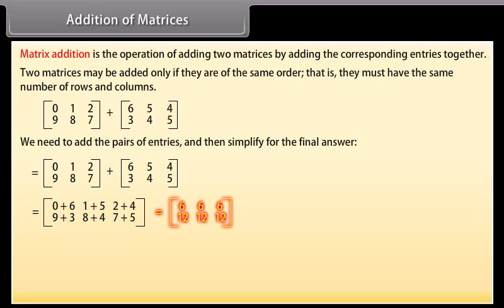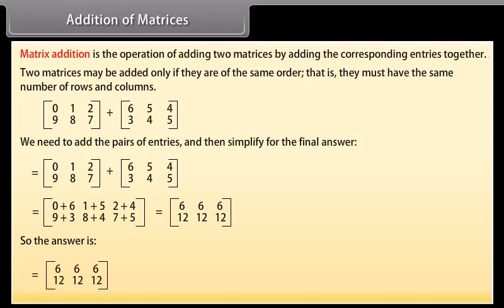So the answer is: row 1 gives [6, 6, 6] and row 2 gives [12, 12, 12].